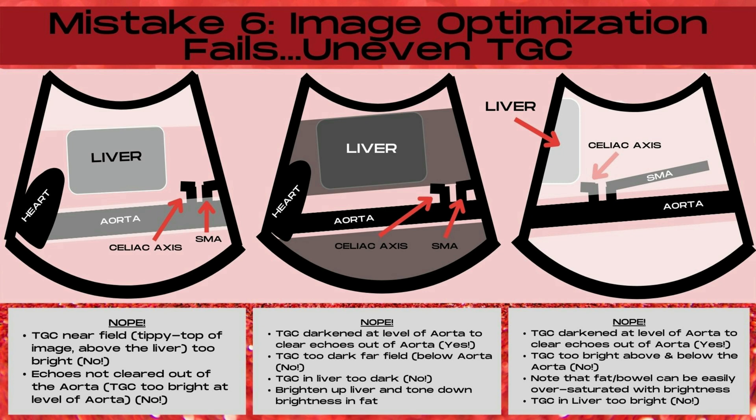In the image to the right, the TGC is correctly darkened at the level of the aorta to clear any echoes out. However, the TGC is too bright above and below the aorta. Note that fat and bowel can easily be oversaturated with brightness, so you want to tone down their brightness level with the TGC. With these bright TGC levels, the liver echo texture itself is also too bright in this image.